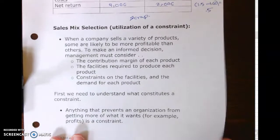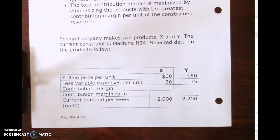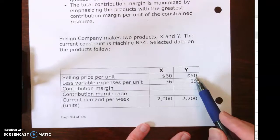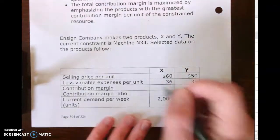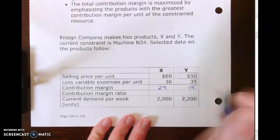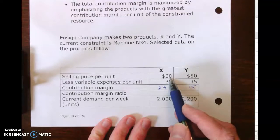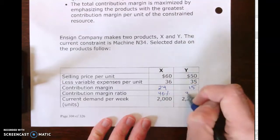Let's walk through an example. Our company makes two products, X and Y. The current constraint is Machine N34. Product X has a selling price of $60 per unit and variable expenses of $36, giving a contribution margin of $24. Product Y has a selling price of $50 per unit and variable expenses of $35, giving a contribution margin of $15. The contribution margin ratios are 40% and 30% respectively.